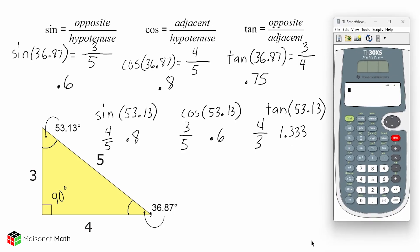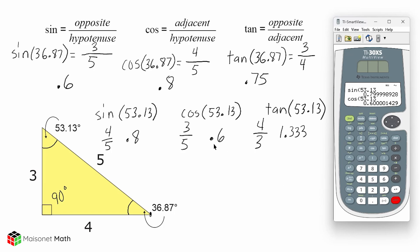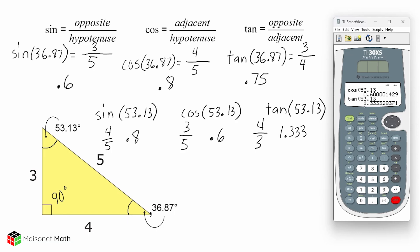Let's go ahead and verify our results with the calculator. Starting with the sine of 53.13 — if we round to the nearest tenth, that gives us 0.8. The cosine of 53.13 rounded to the nearest tenth gives us 0.6. And the tangent of 53.13 gives a result of approximately 1.333 repeating to the nearest tenth.